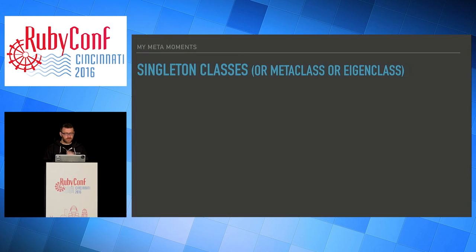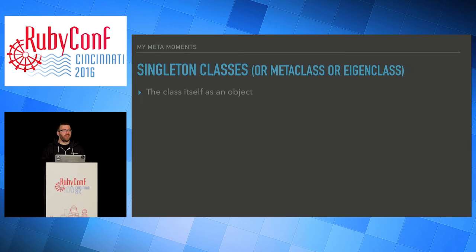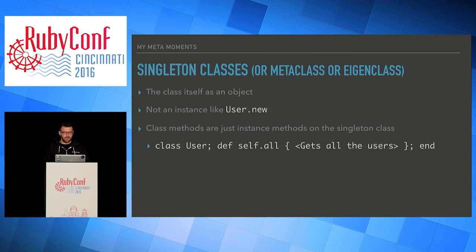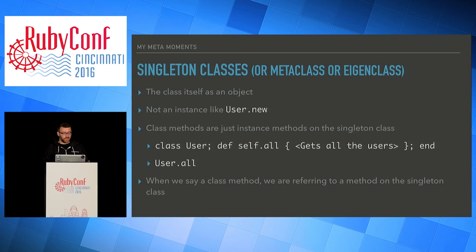Singleton classes — a singleton class might also be called a metaclass or an eigenclass; there's not universal agreement. The way to view it: it's a class that itself is an object, not an instance of a class — it is the instance of the class. It's not like user.new. A class method is actually just an instance method on the singleton class. So when you have a class of User and you have an 'all' method, user.all is actually a class method but it's an instance method on the singleton class. This was one of the harder concepts for me to grasp.